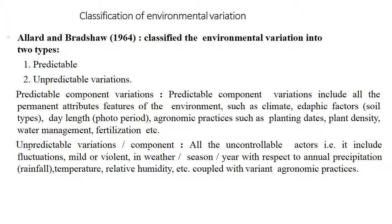Coming to the classification of environmental variation, Allard and Bradshaw in 1964 classified environmental variation into predictable and unpredictable variations. The first is predictable component variation, which includes all the permanent attributes and features of the environment like climate, edaphic factors like soil type, day length or photoperiod, and agronomic practices like planting date, plant density, water management, fertilization, etc.